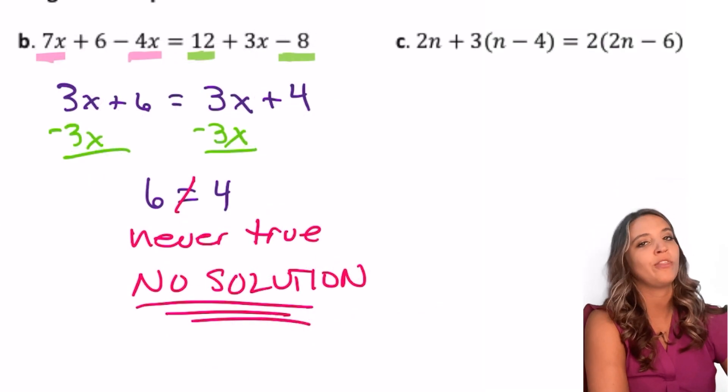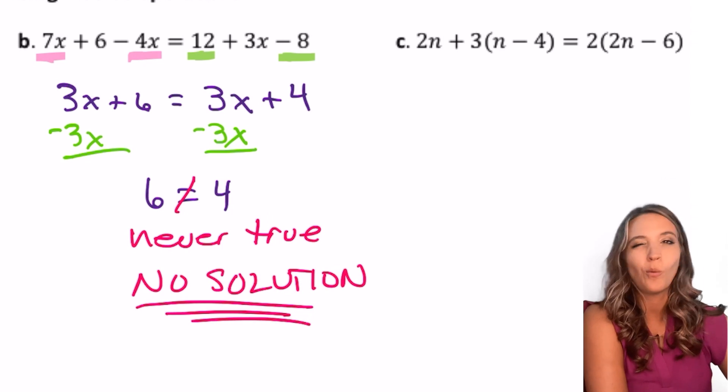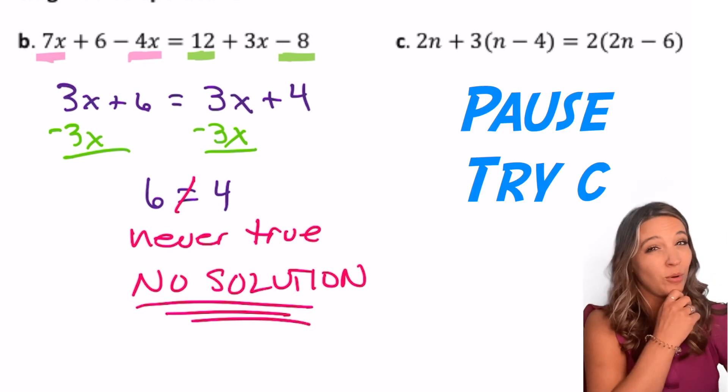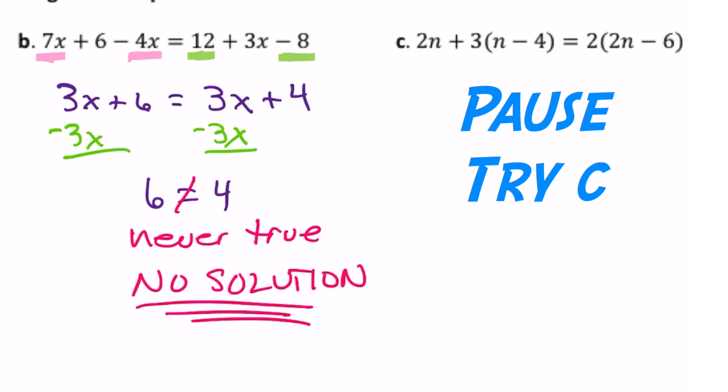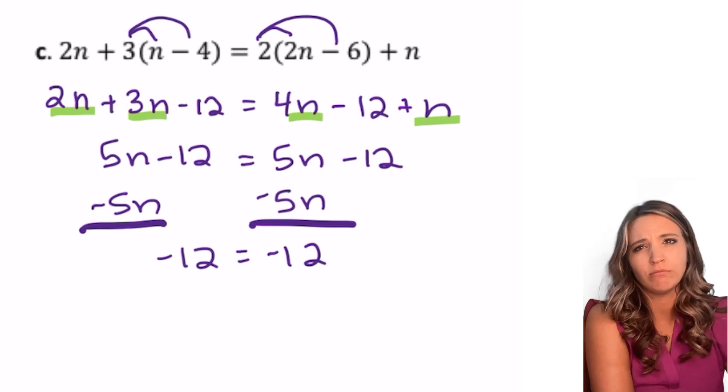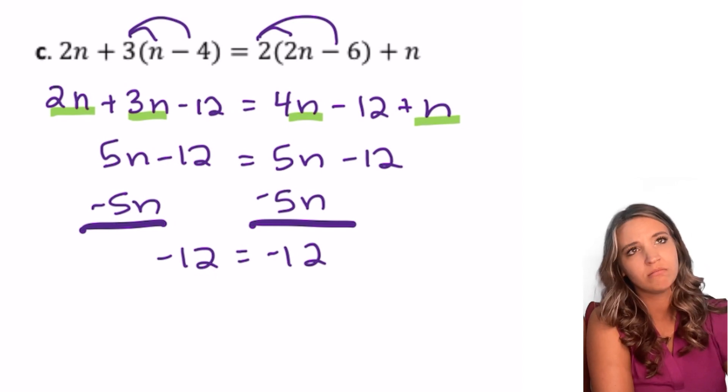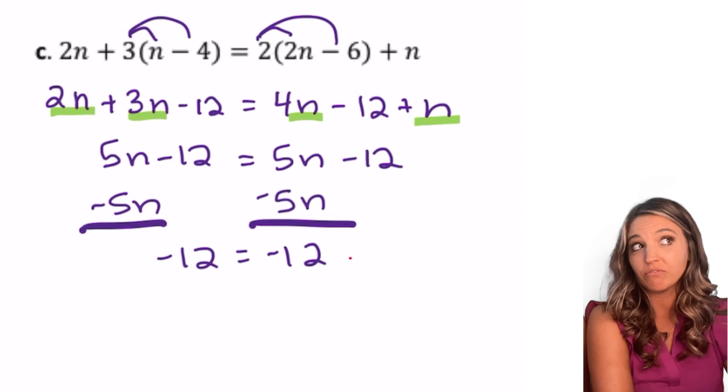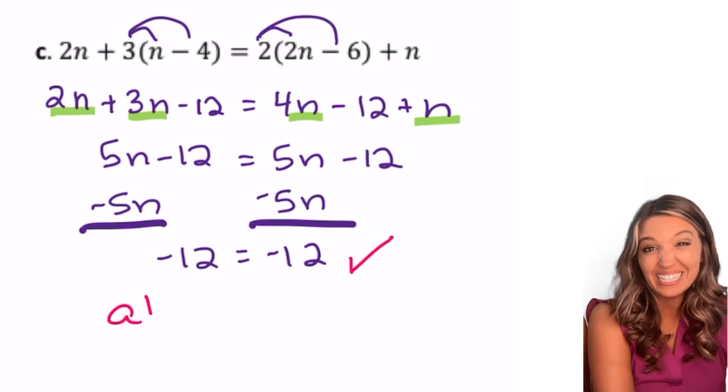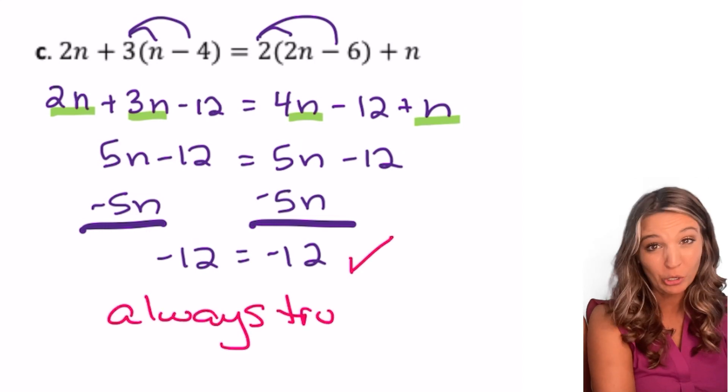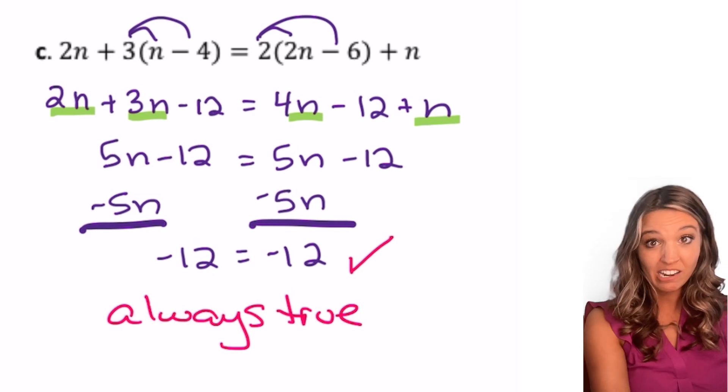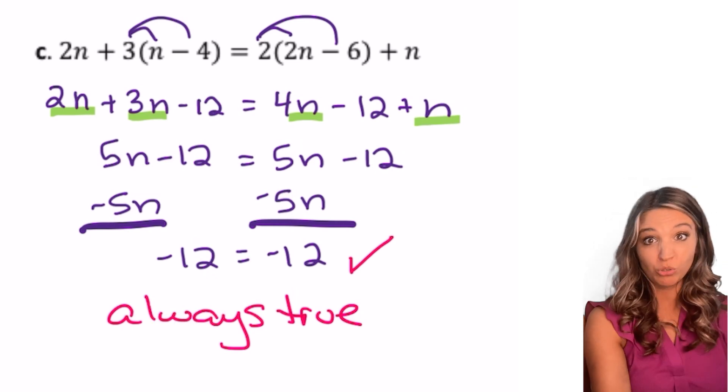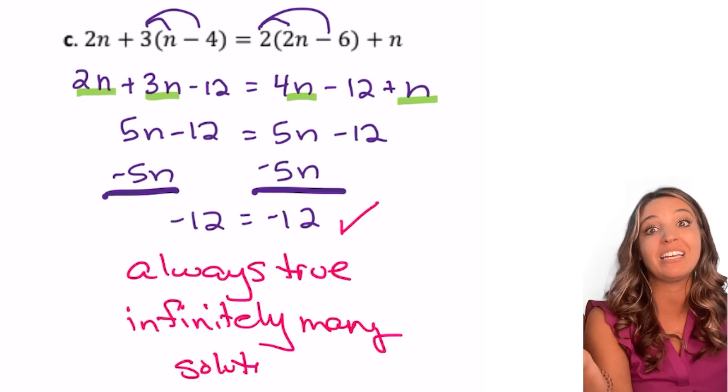Okay. I really warmed up with you on those first two. What about the third one? What do you think you'd do first? And then what would you do? Pause, try. Look at that. My variable subtracted out. So is it just no solution again? Hmm. Negative 12 equals negative 12. That's actually always true. So that means for any real number for n, this equation's true. Infinitely many solutions.